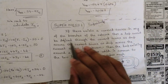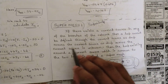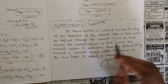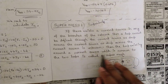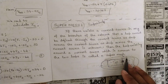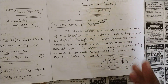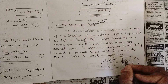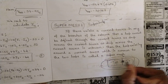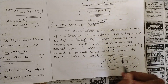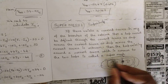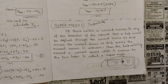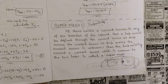Since the drop across a current source is unknown, the loop existing around the current source which is common to the two loops is called a super mesh. Whenever we have a current source between any two loops, those two loops combine to form a single loop called a super mesh or super loop, and for that super mesh we write the equation and solve.